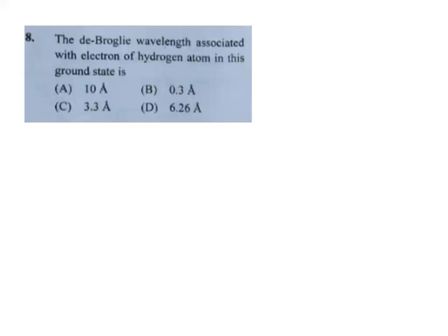Next problem: the de Broglie wavelength associated with the electron of the hydrogen atom in the ground state. De Broglie wavelength lambda equals h divided by p, that is h divided by mass into velocity.